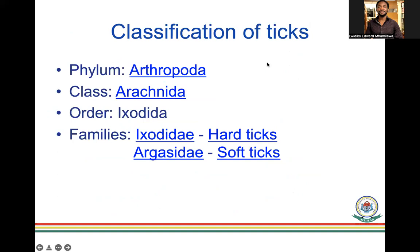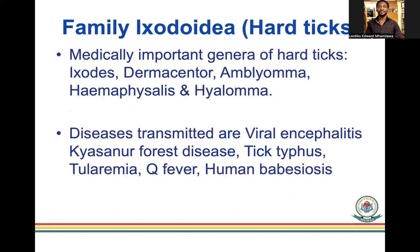The classification is Arthropoda, Arachnida, Ixodida, and the family Ixodidae which are hard ticks, and Argasidae which are soft ticks. To remember: X equals hard — Ixodidae is hard ticks; Argasidae is soft ticks.